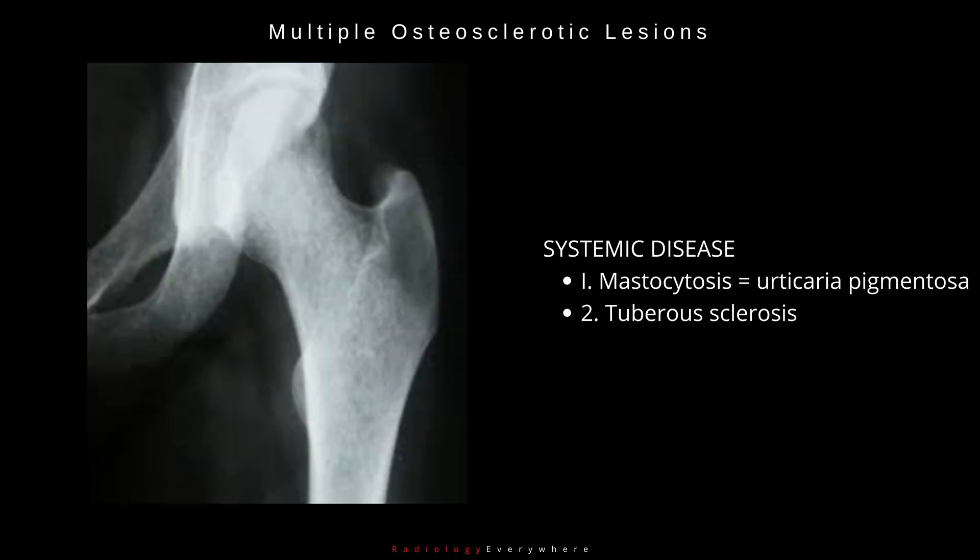B. Systemic diseases include: 1. Mastocytosis, or Urticaria pigmentosa. 2. Tuberous sclerosis.